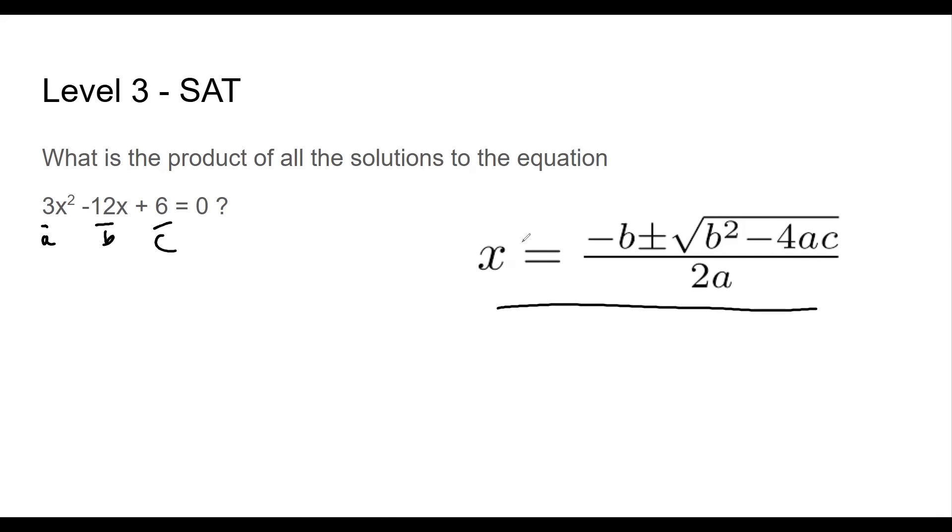All right, so negative b. So that's going to be negative, negative 12. All right, now I'm going to go ahead and make that a positive. So I'm going to erase that because a negative and negative goes to a positive. Plus or minus the square root b squared, which is 12. 12 squared is 144. Minus 4ac. 4 times 3 times 6 because you've got your a and your c.